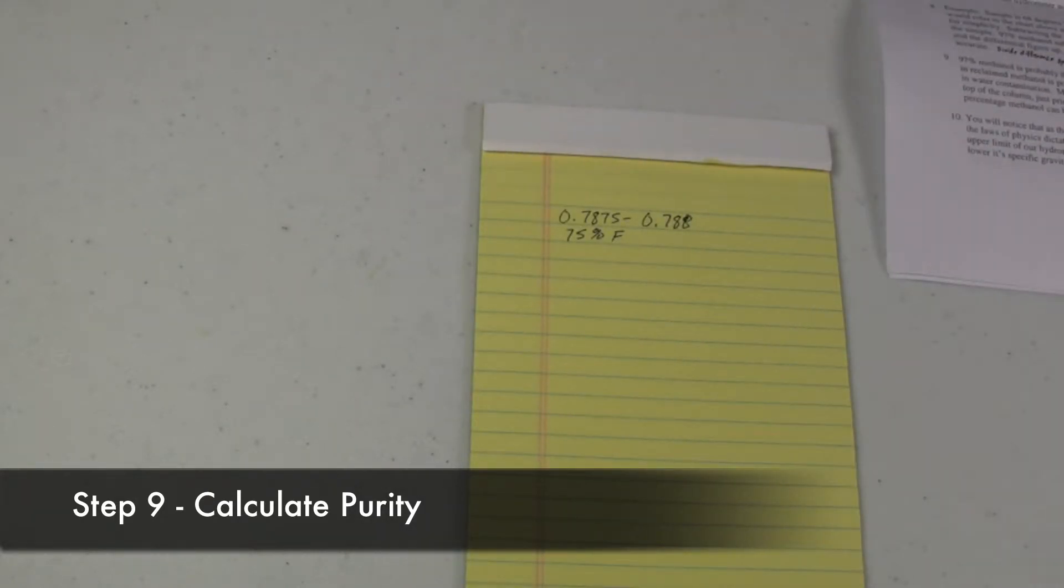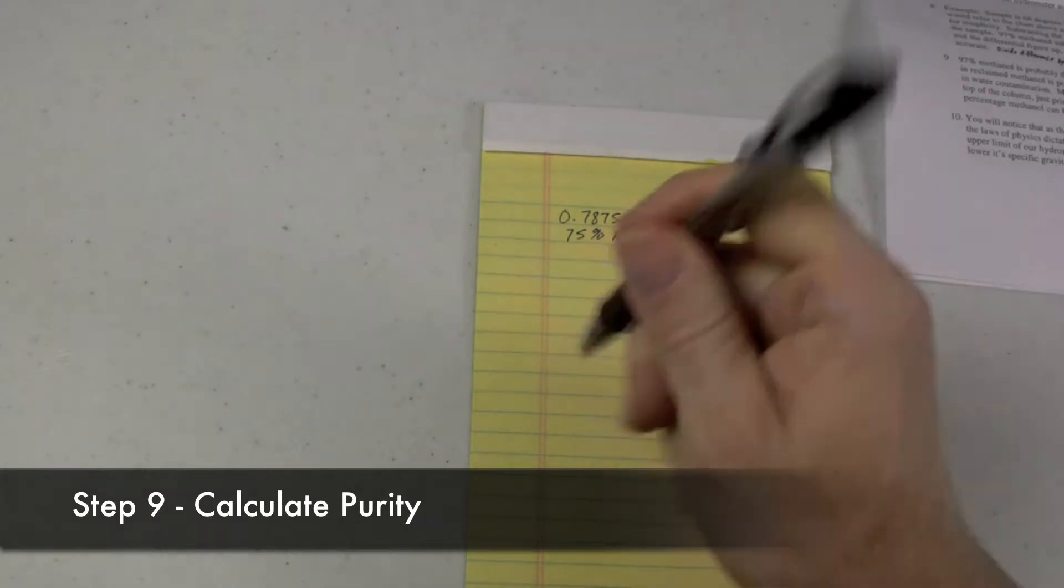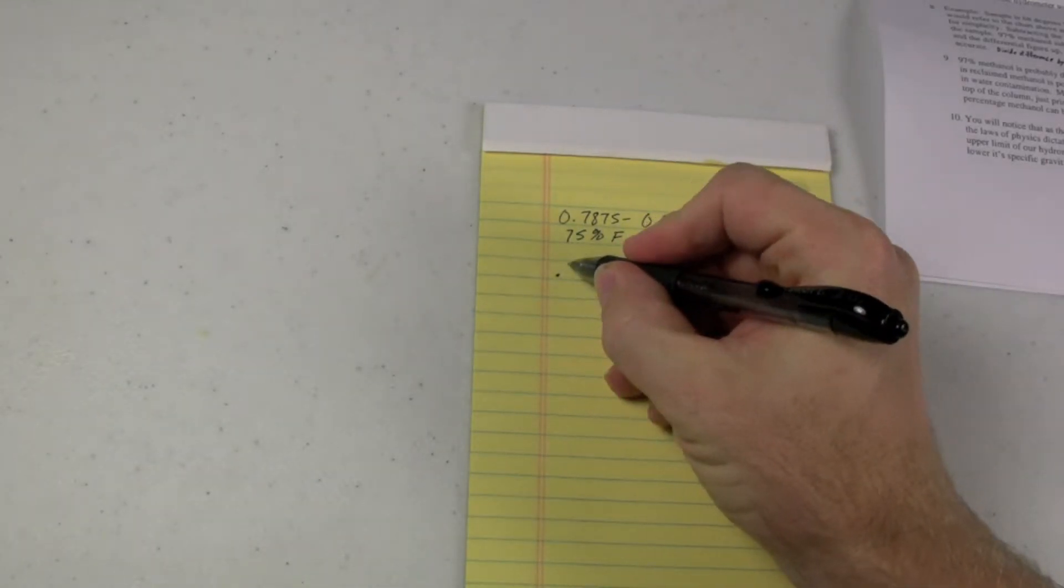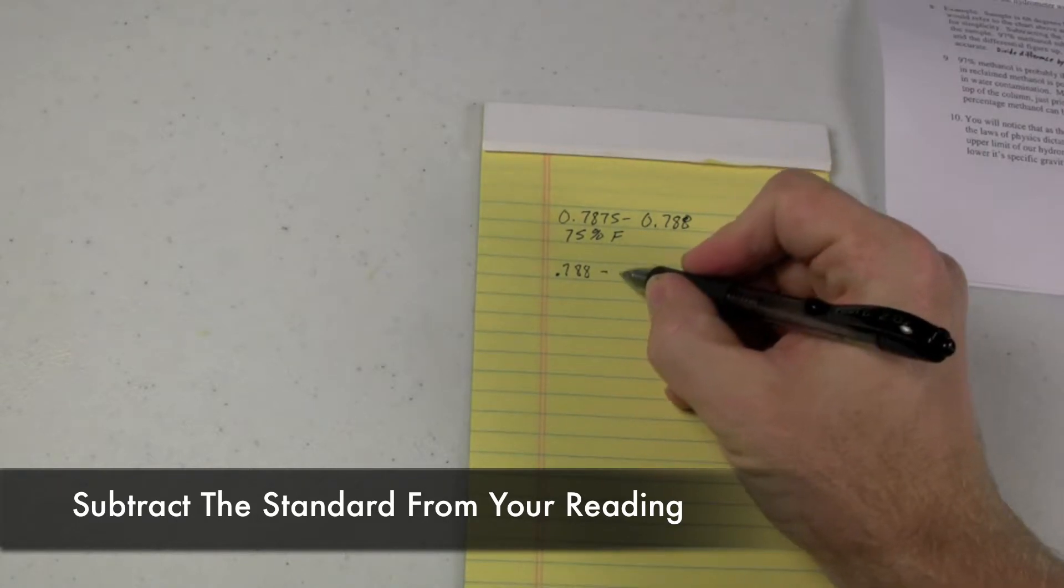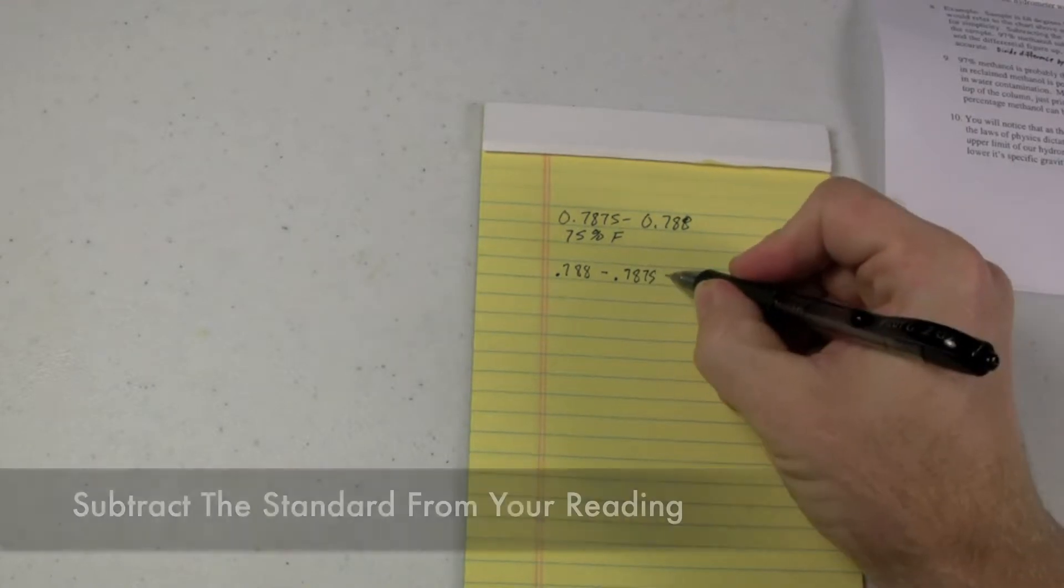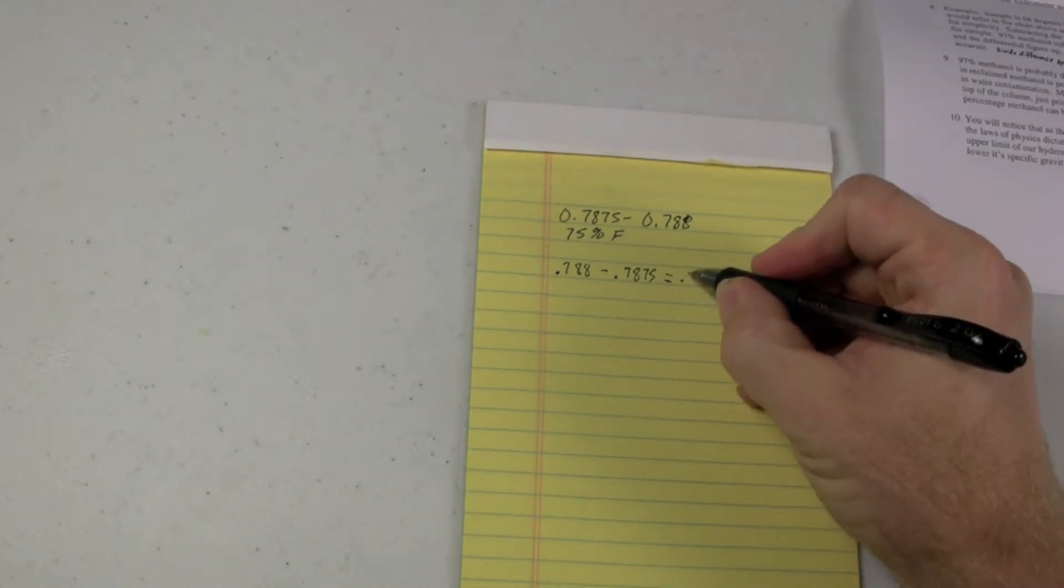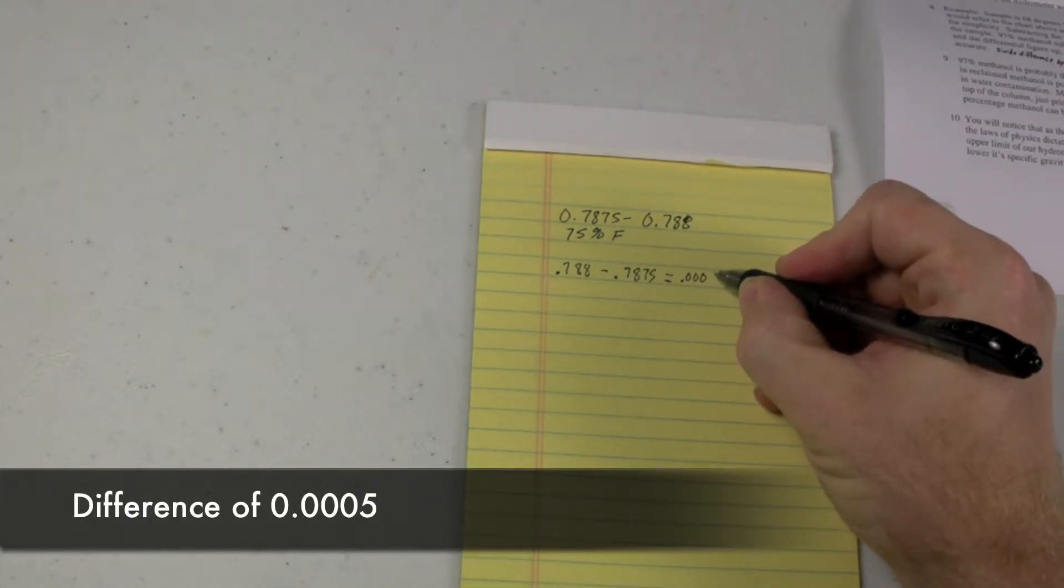So the way that you calculate your methanol is you would take the reading that you got .788 and you subtract from it what it should be .7875. That equals .0005.